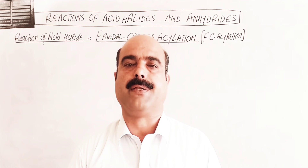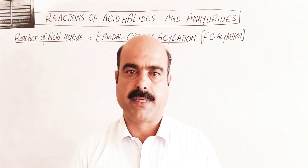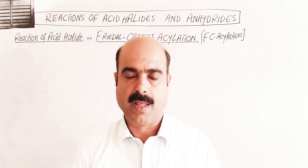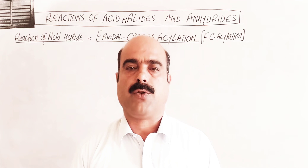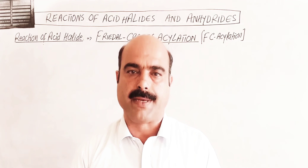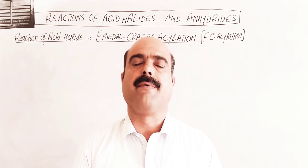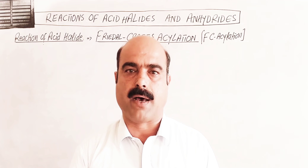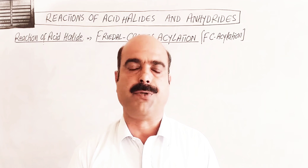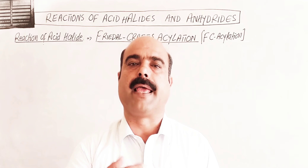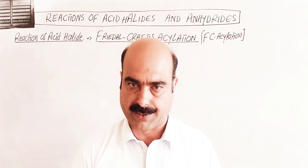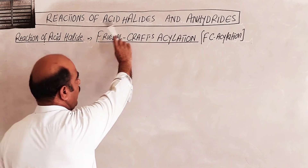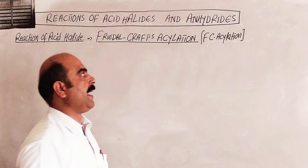Carboxylic acids and their derivatives — specifically the chemical reactions of derivatives of carboxylic acids. The first two derivatives are the acid halides or acyl halides, and acid anhydrides. We will cover reactions of acid halides and anhydrides.